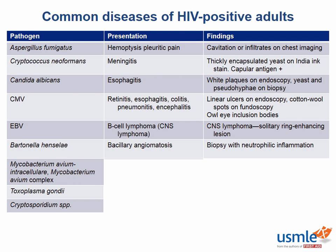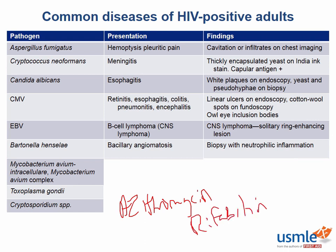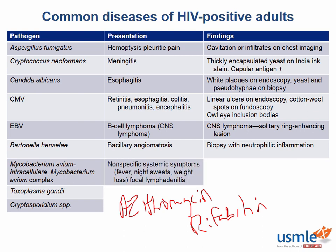Mycobacterium avium intracellulare is a mycobacterium that is very common in patients with AIDS. We can give azithromycin or rifabutin to prevent this mycobacterial infection. It causes nonspecific symptoms such as fever, night sweats, and weight loss, as well as focal lymphadenitis — infection and inflammation of the lymph nodes.